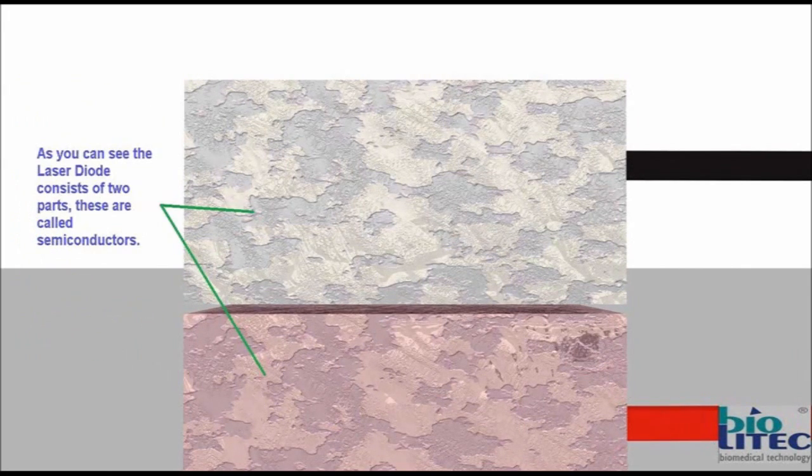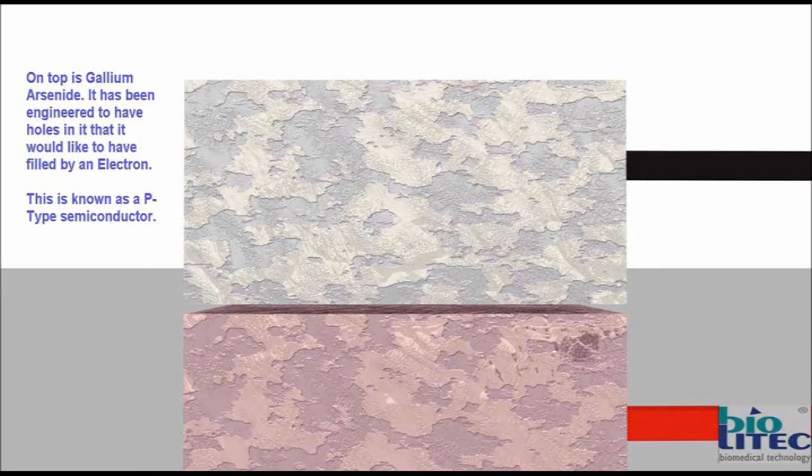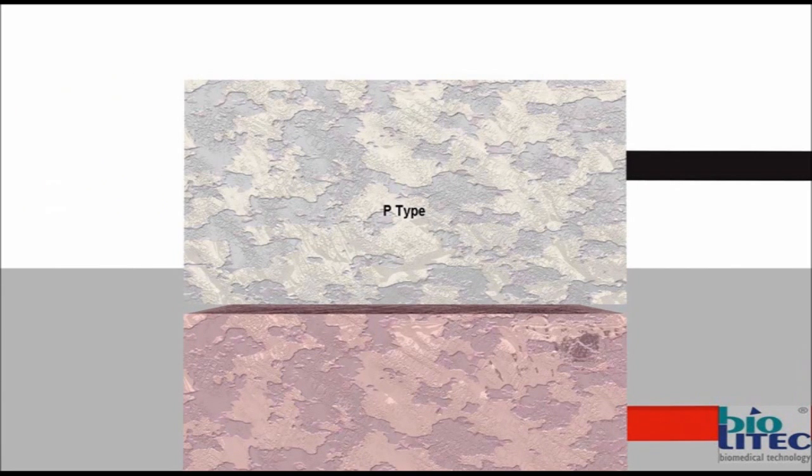As you can see, the laser diode consists of two parts. These are called semiconductors. On top is gallium arsenide. It has been engineered to have holes in it that it would like to have filled by an electron. This is known as the P-type semiconductor.